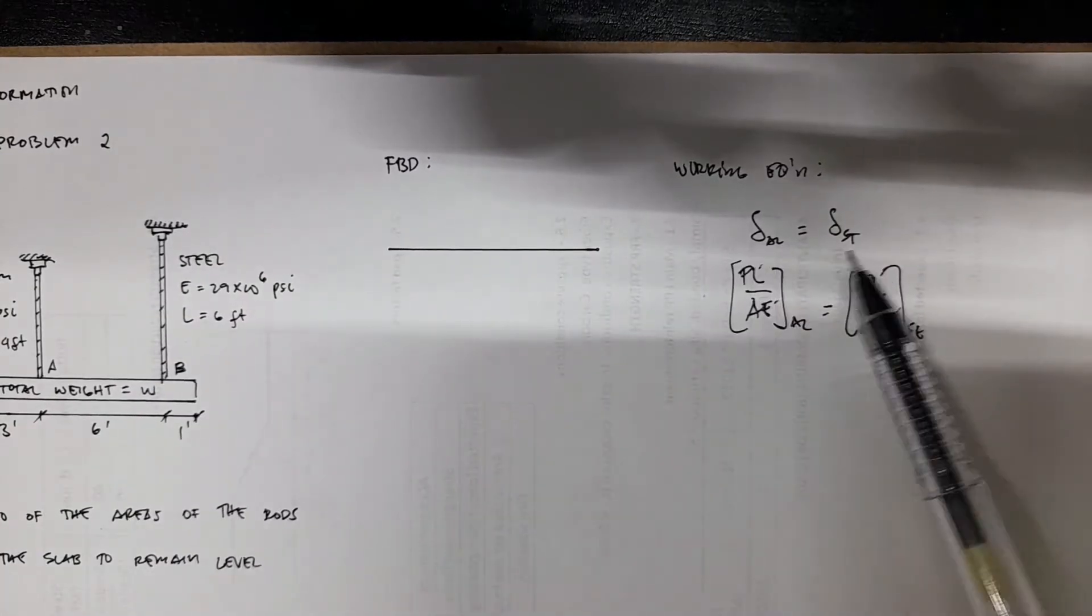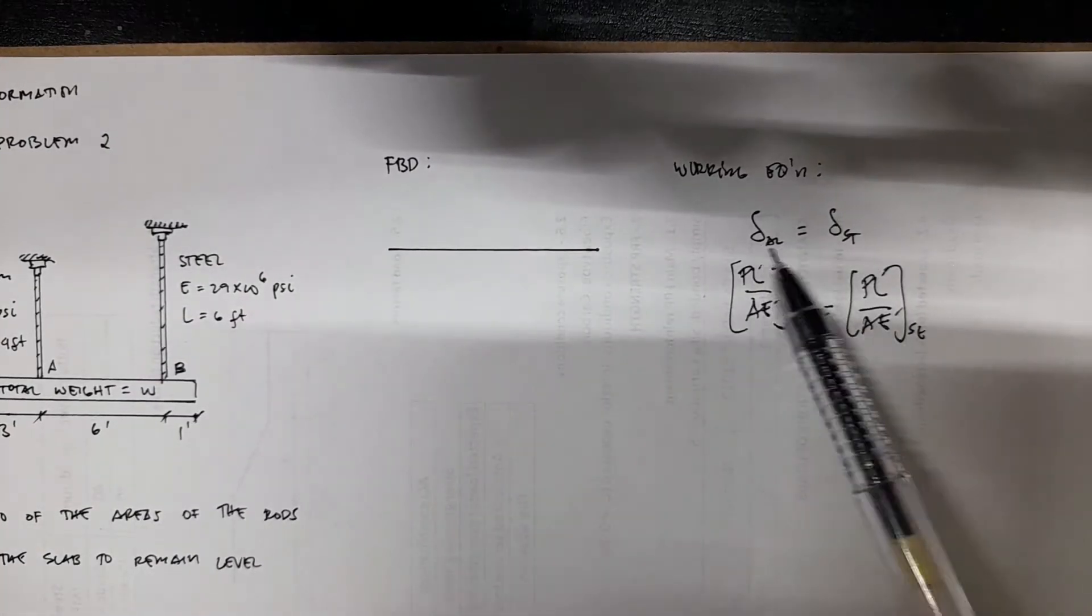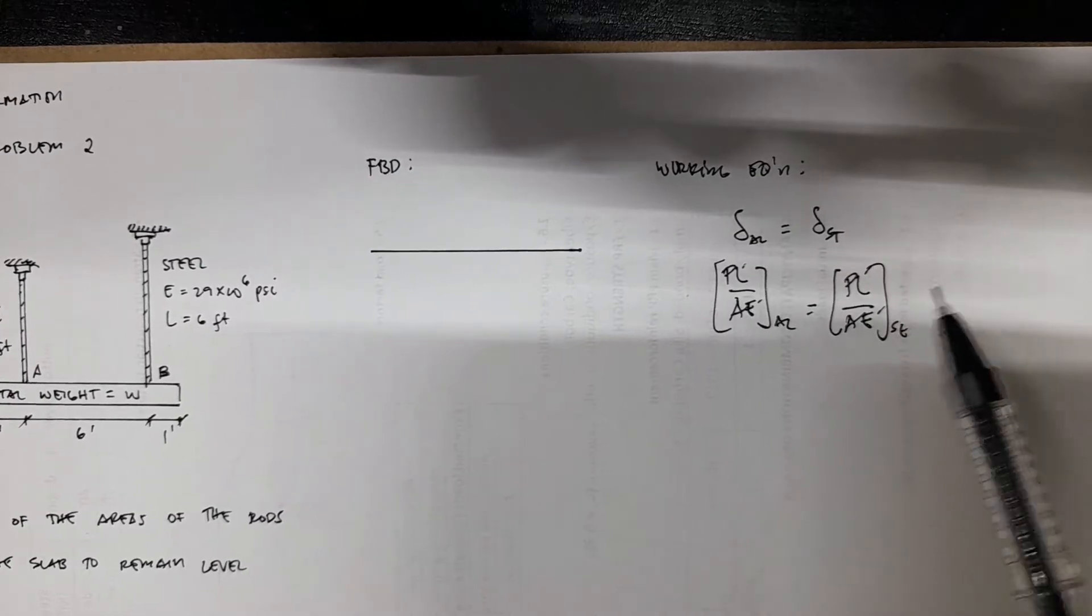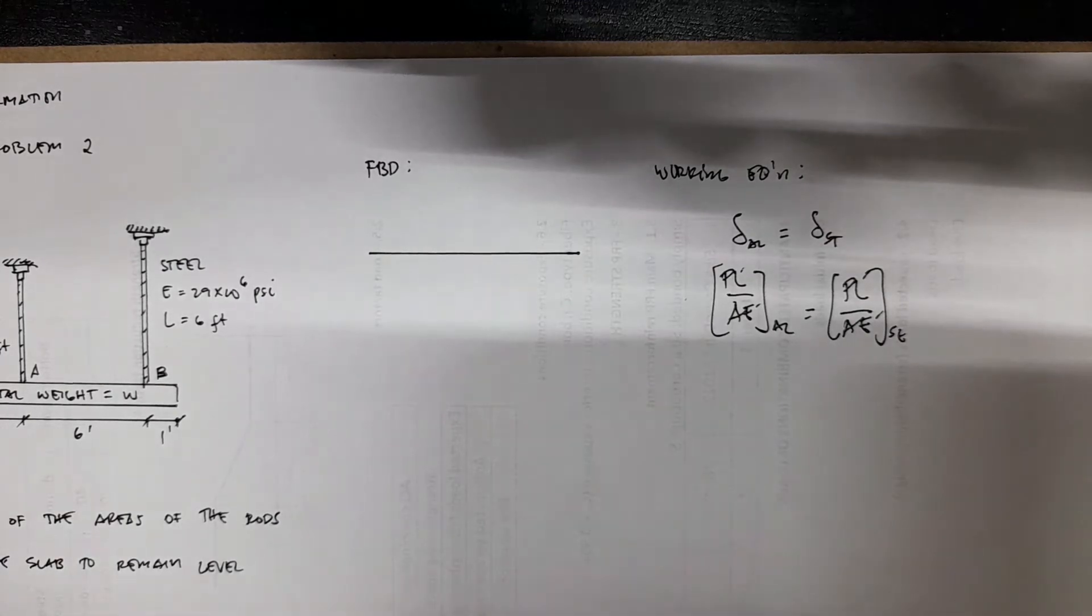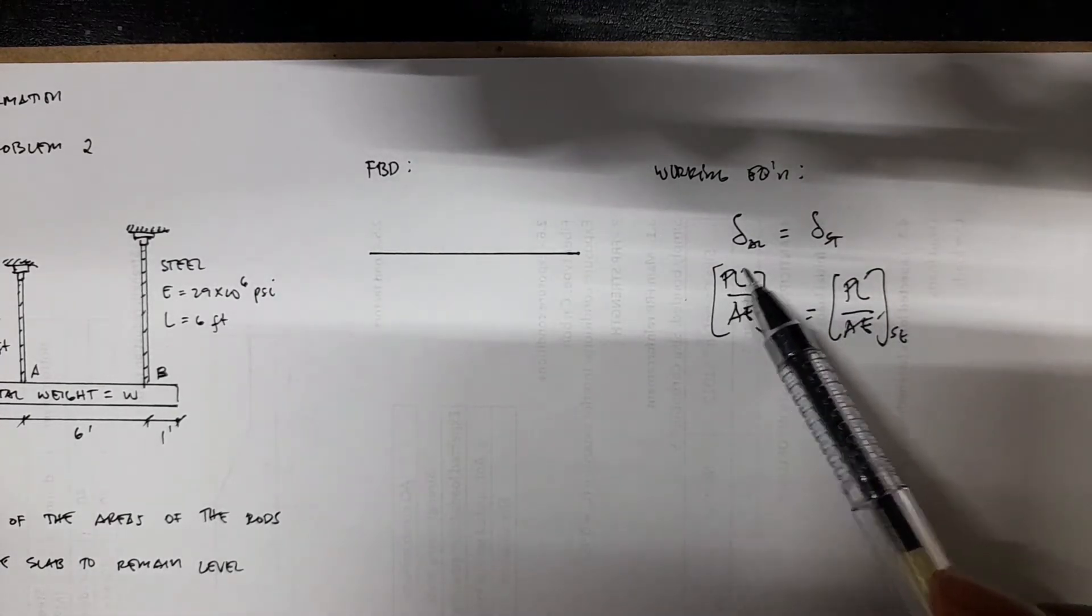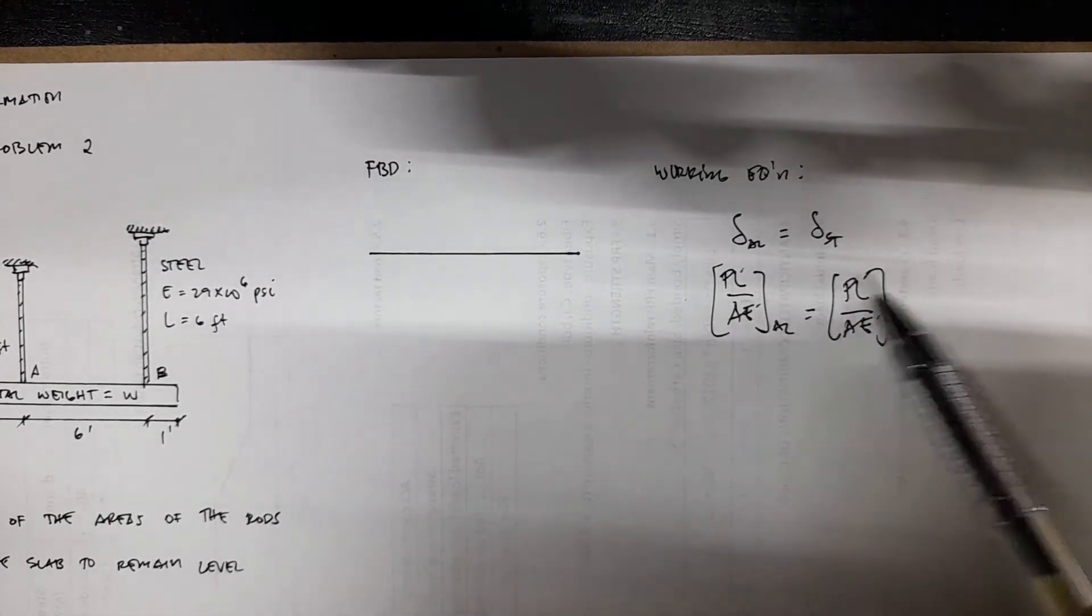Our working equation here: we have the deformation of aluminum equals deformation of steel. So you have PL over AE of aluminum equals PL over AE of steel. The L is known, E is known for both sides.